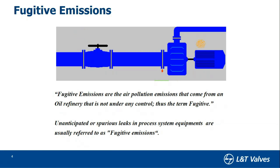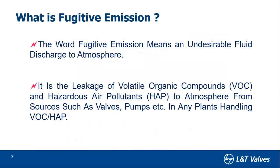So what we are talking about are volatile organic compounds, called VOCs — like methane, propane, benzene — which are carcinogenic in nature and can cause damage to the atmosphere. They are the ones which need to be controlled. The definition is simple: it's a leakage of volatile organic compounds such as benzene and methane, which are classified as air pollutants, from sources like valves, pumps, or any other plant handling these VOCs.